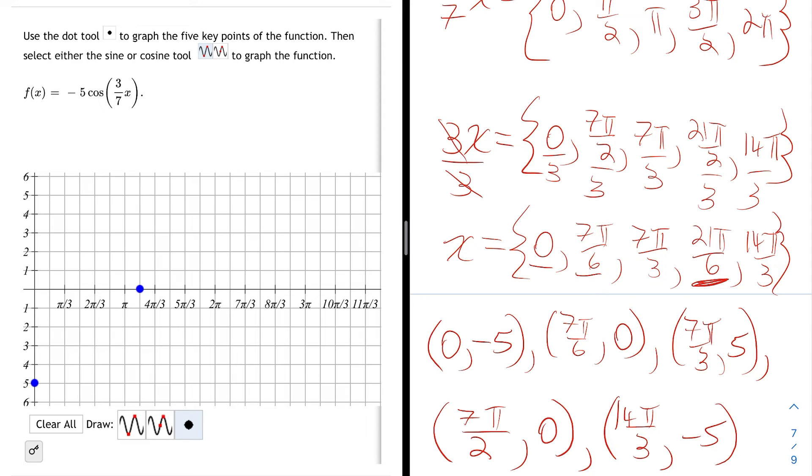Then I have 7π/3, 5. And then I have 7π/2, 0. My next x-intercept is at 7π/2. But if you remember, 7π/2 was a reduction of 21π/6.